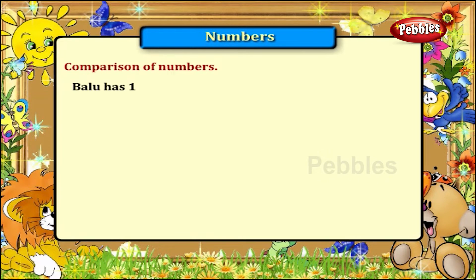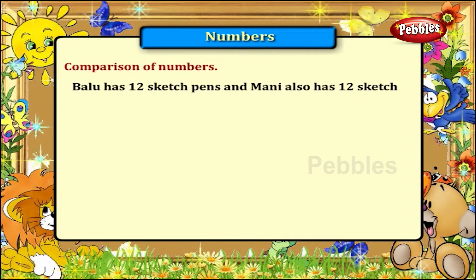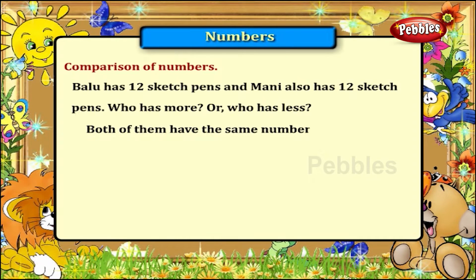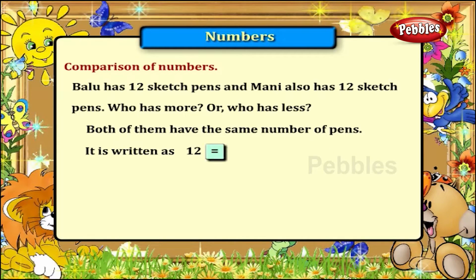Baloo has 12 sketch pens and Mani also has 12 sketch pens. Who has more or who has less? Both of them have the same number of pens. And this is written as 12 equal to 12.